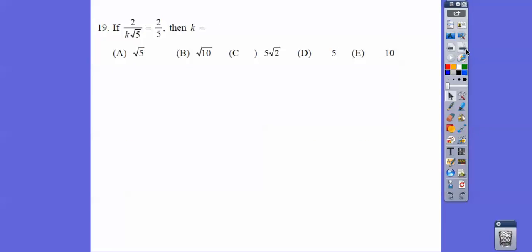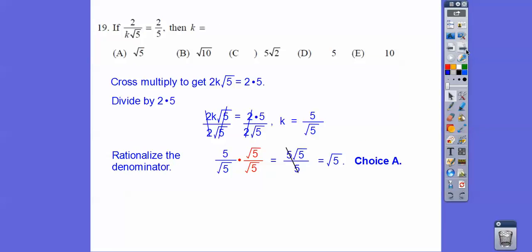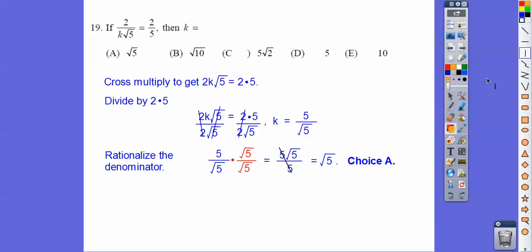So here, we're going to go ahead and cross-multiply. When we cross-multiply, and then divide by 2 root 5, that should be root 5 right there. Let's see if I can fix that real quick. 2 root 5, there should be a square root right there. And so when we divide both sides by 2 root 5, the root 5s cancel, the 2s cancel, K equals 5 over root 5.